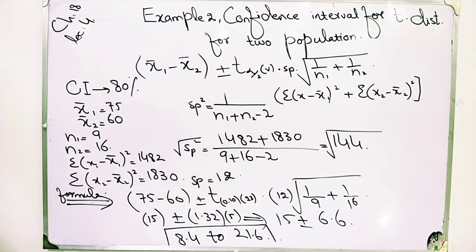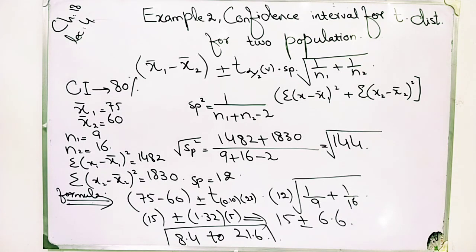The confidence intervals are given and the question is solved. Hence, the 80% confidence interval for μ₁ minus μ₂, calculated from the given information, is 8.4 to 21.6. If you have any problem, you can discuss it in the comments and I will help you.